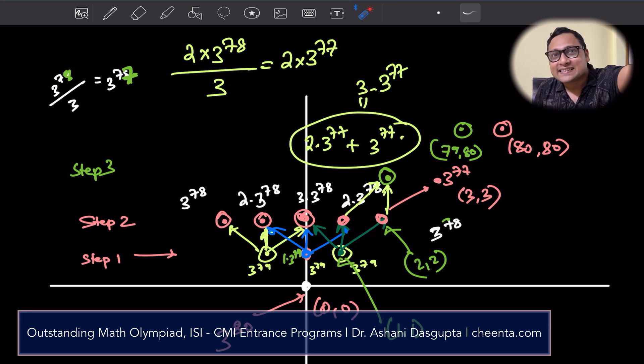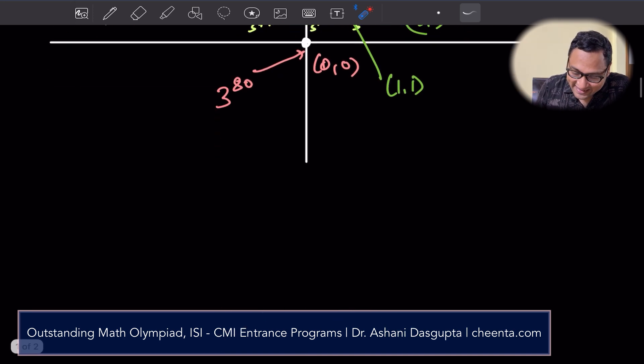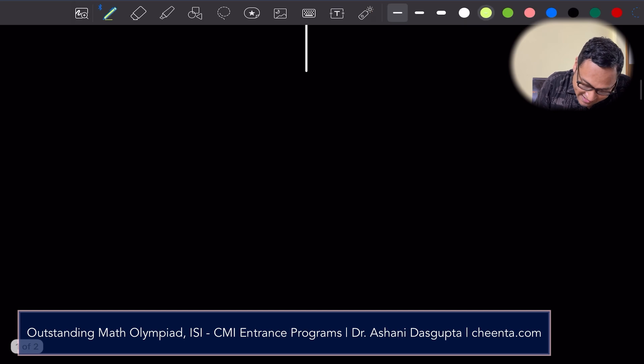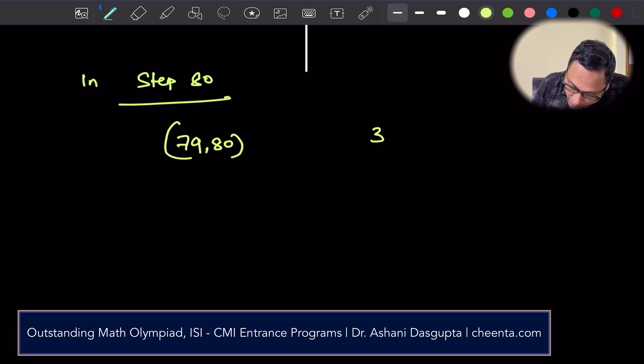So in the 80th step, the coefficient will increase to 80. And the power will decrease to 0. So in the 80th step, in step 80, in the position 79, 80, there will be 3 to the power 0 times 80 particles. So 80 particles in total. It's quite beautiful that how this works out.